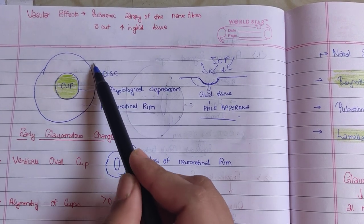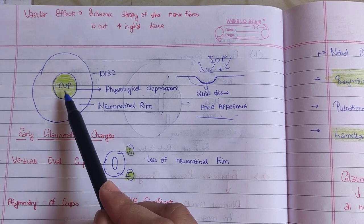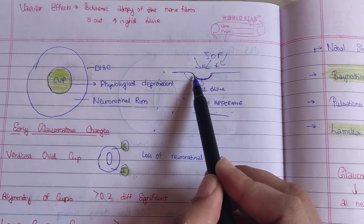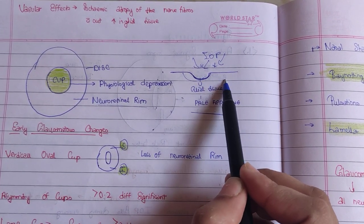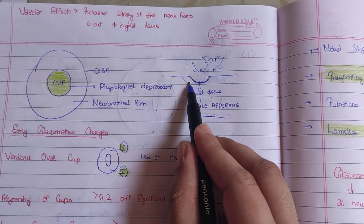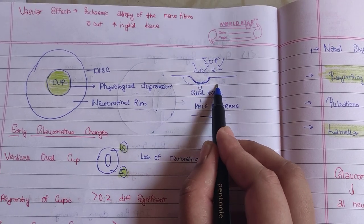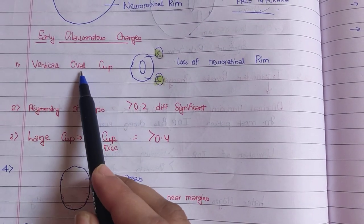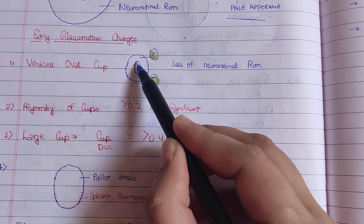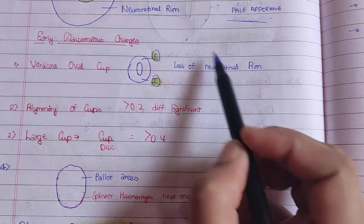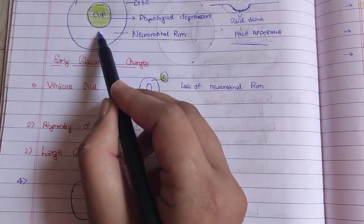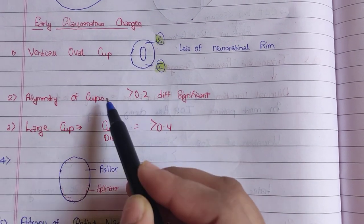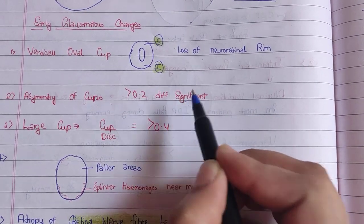Before discussing early glaucomatous changes — inside the disc there is a physiological depression called the cup, and the tissue on the sides of the cup is called the neuroretinal rim. The early change you will see is a vertically oval cup — the cupping becomes oval because the neuroretinal rim loss occurs in the superior and inferior regions.